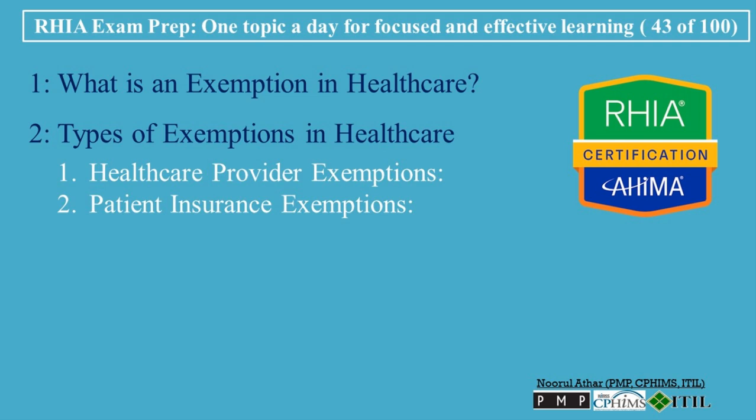Patient Insurance Exemptions: Under the Affordable Care Act (ACA), individuals are required to have health insurance, but some people qualify for exemptions from this requirement. These exemptions may be granted due to financial hardships, religious objections, or other qualifying life events. For instance, if someone cannot afford insurance coverage, they may apply for a financial hardship exemption.